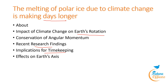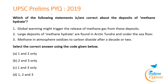The melting of polar ice also affects the Earth's axis of rotation. Research indicates that melting ice is causing the Earth's axis to shift slightly over time. The shifting of the axis, combined with rising sea levels in coastal areas, underscores the broader impacts of climate change beyond just slowing Earth's rotation. A UPSC Prelims 2019 question on methane hydrate deposits — all three statements were correct: answer B (1, 2 and 3).